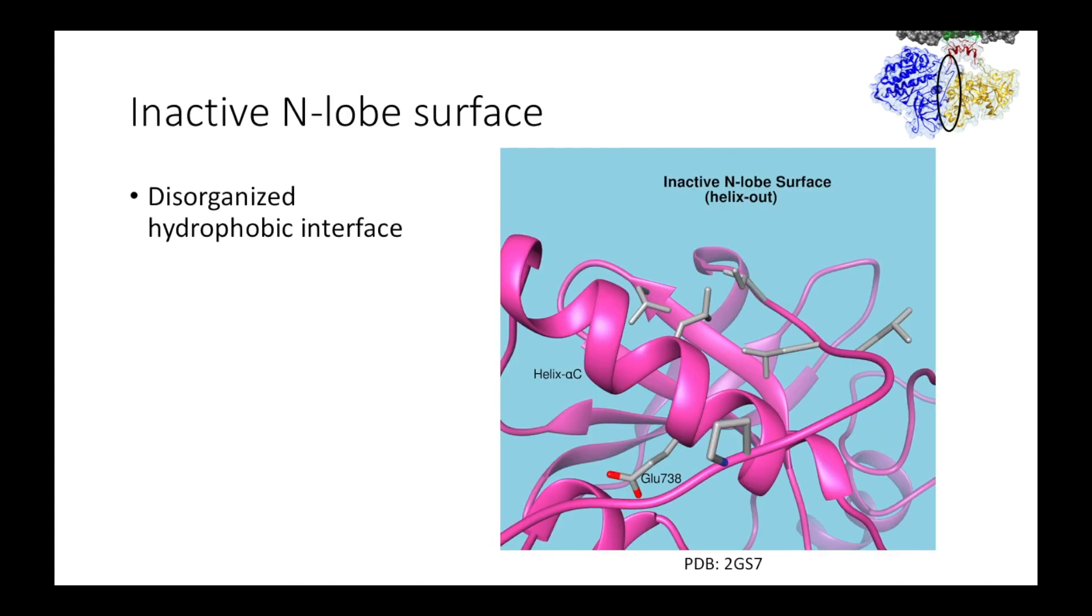Now, the question is, how does the activator affect this change upon the receiving kinase? The interaction occurs at the broad interface between the dimerized kinase domains. This is an image of the N-lobe surface of the receiving kinase in the undimerized inactive conformation. Here's helix alpha-C and the crucial ion pairing glutamate. On the N-lobe surface are several hydrophobic amino acid residues in a disorganized conformation.